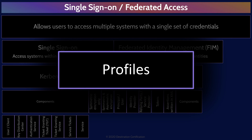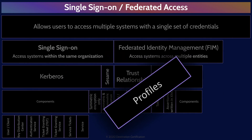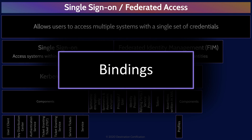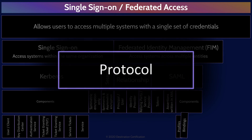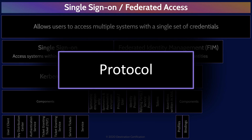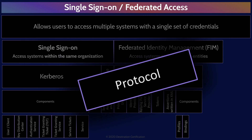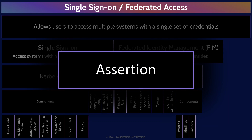Profiles define how SAML can be used for different business use cases, such as for Web Single Sign-On or for LDAP. Bindings map SAML onto different communication protocols — for example, HTTP — allowing SAML to communicate across different types of networks. The protocol component within SAML defines how entities send and respond to requests. And the assertion component defines the authentication, authorization, and other such attributes.